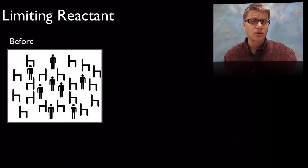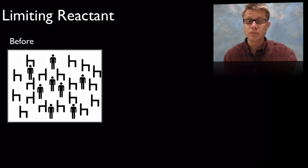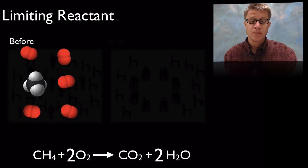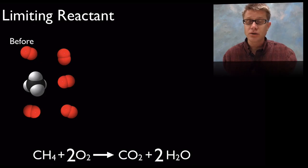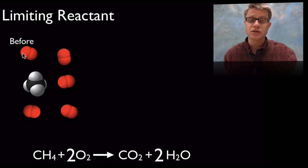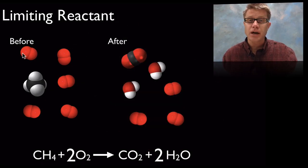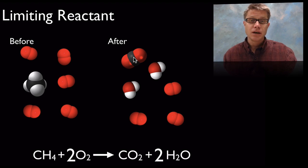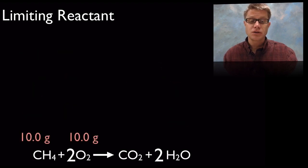What's a limiting reactant or limiting reagent? That's something in an equation that we don't have enough of. In the musical chairs example, the limiting reactant would be the number of people — once they sit down, we'll have a lot of extra chairs. Let's look at a simplified model of the methane reaction: we've got 1 methane and 5 water molecules before the reaction. After the reaction, the limiting reactant was methane. If we had more methane we could have had more product, but since we only had 1 carbon we could only make 1 carbon dioxide. Limiting reactants are another thing we can measure using stoichiometry.